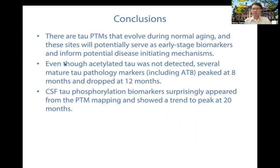In conclusion, there are indeed Tau PTMs that evolve during normal aging, and this information could be helpful for biomarker development and mechanistic study. Several mature Tau pathology markers, such as AT8, peak at 8 months and drop at 12 months — this reduction may indicate a conformational change of Tau during aging and before disease. CSF Tau biomarkers appear from PTM mapping at 12 months, and the kinases against these sites could be promising targets for investigation.